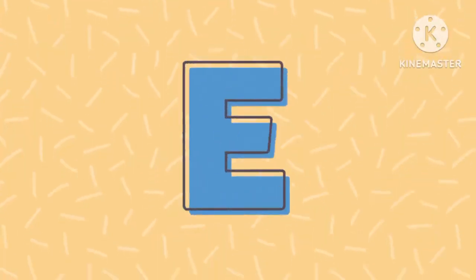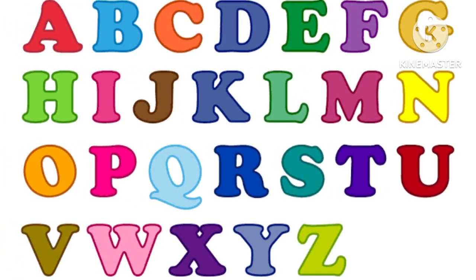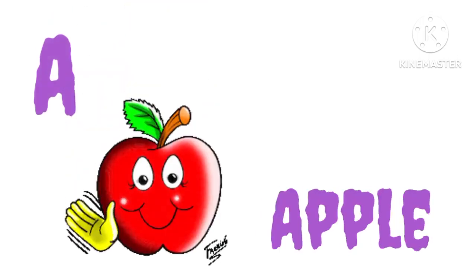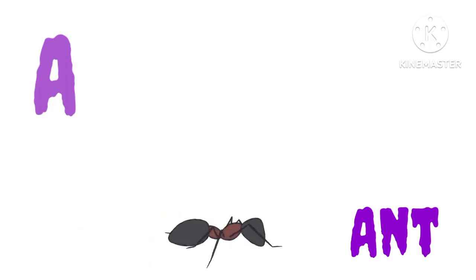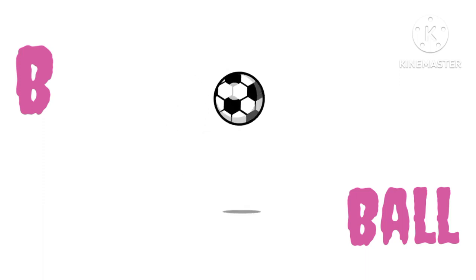Hello kids, welcome back to my YouTube channel Danish Kids Academy. Today we will learn from A to Z with spelling and picture. So let's start. A for apple, A for ant, A for aeroplane.